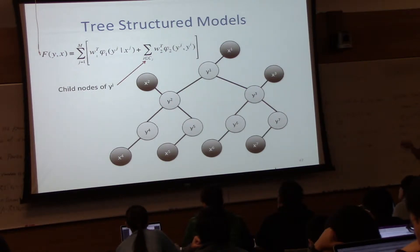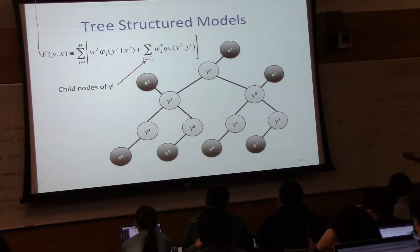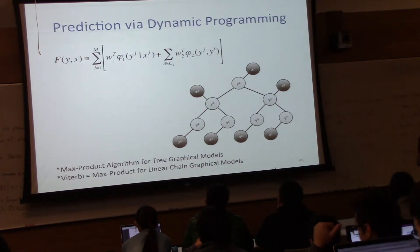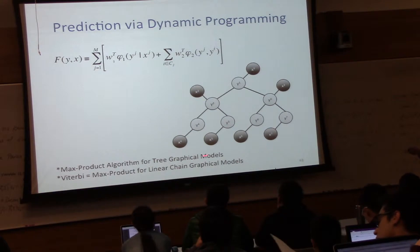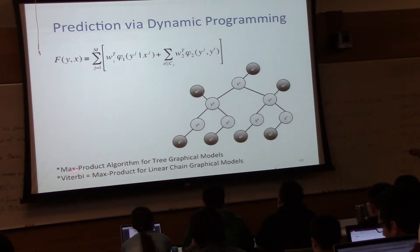So given a set of x's, I want to find, I can score any y. And finding the optimal y, you can also solve using dynamic programming. It's called the max product algorithm for tree graphical models. But Viterbi is the special case of the max product algorithm for linear chain graphical models.